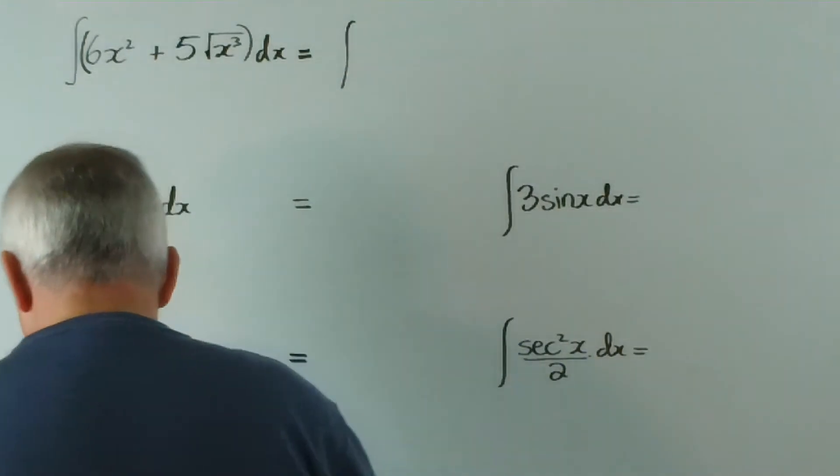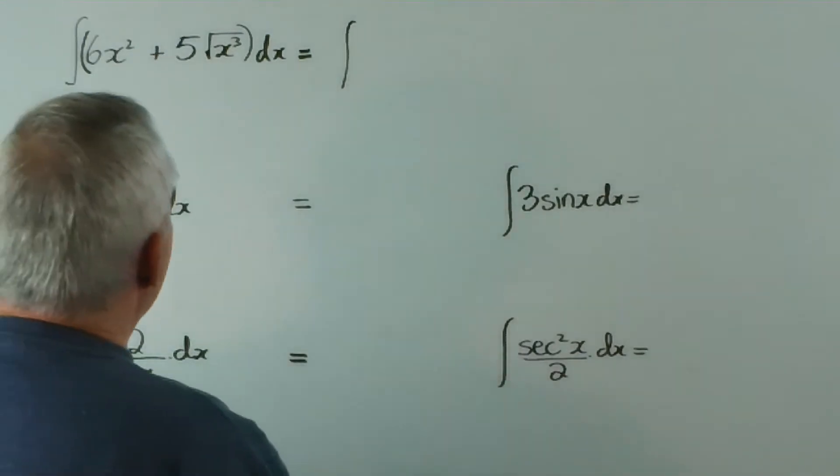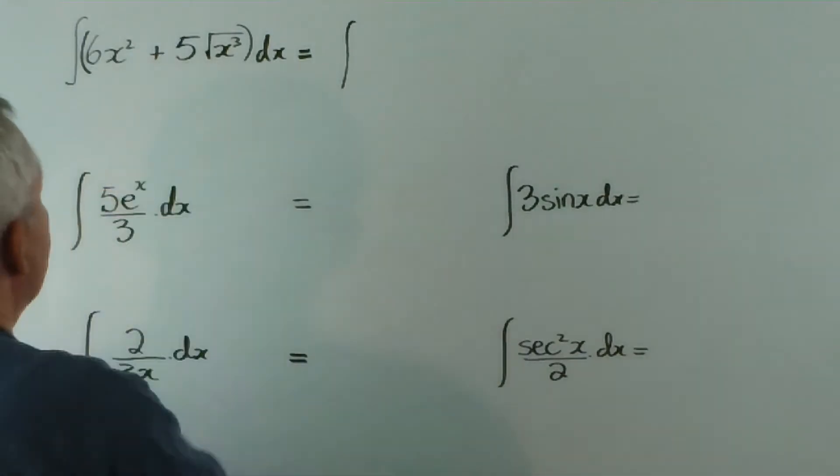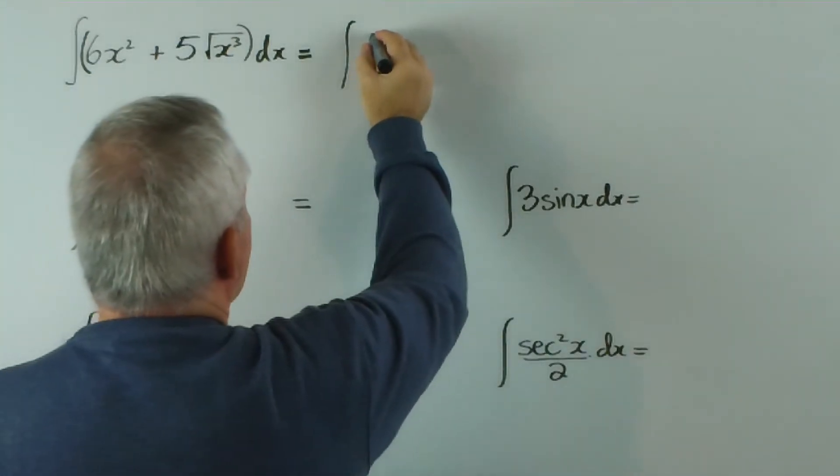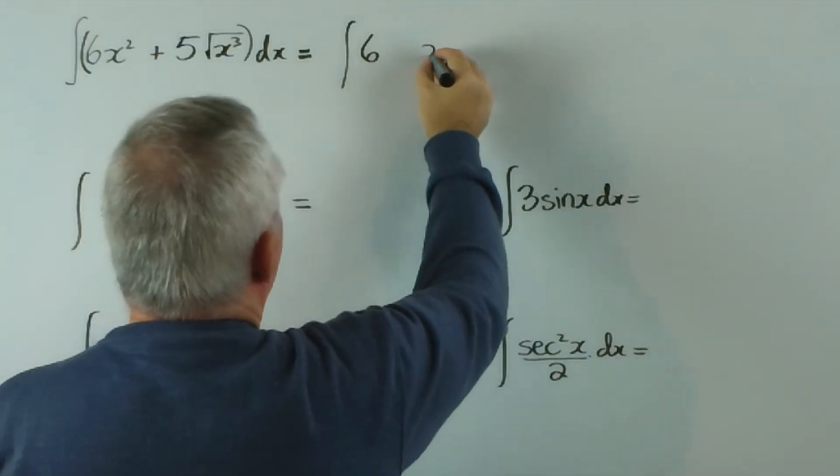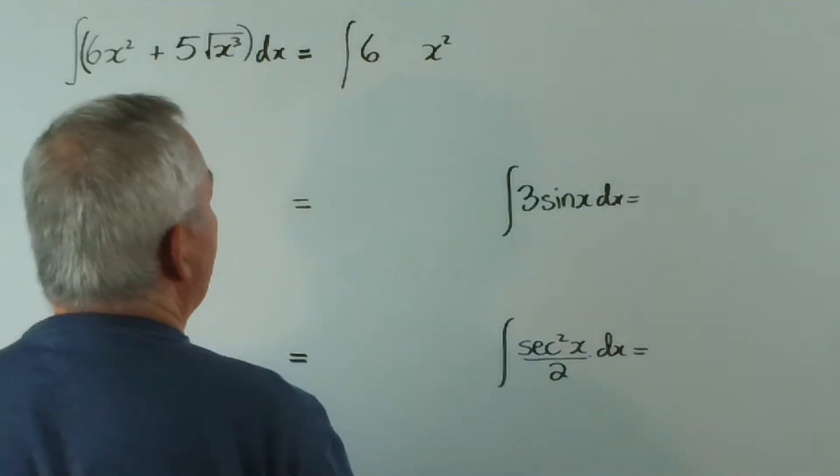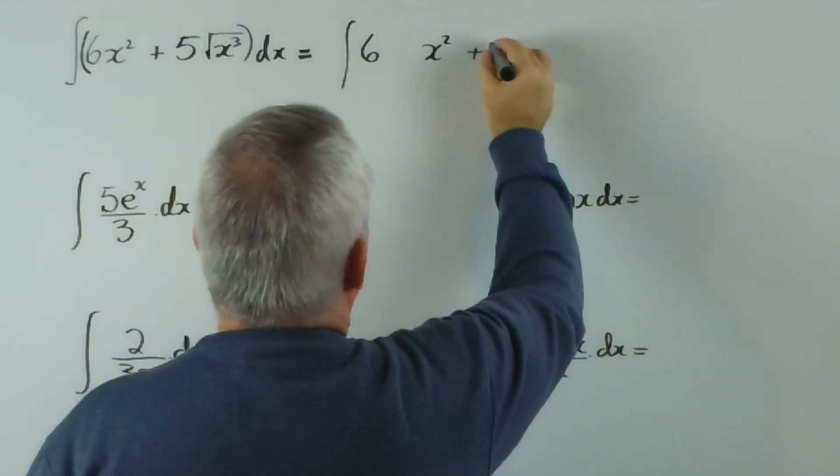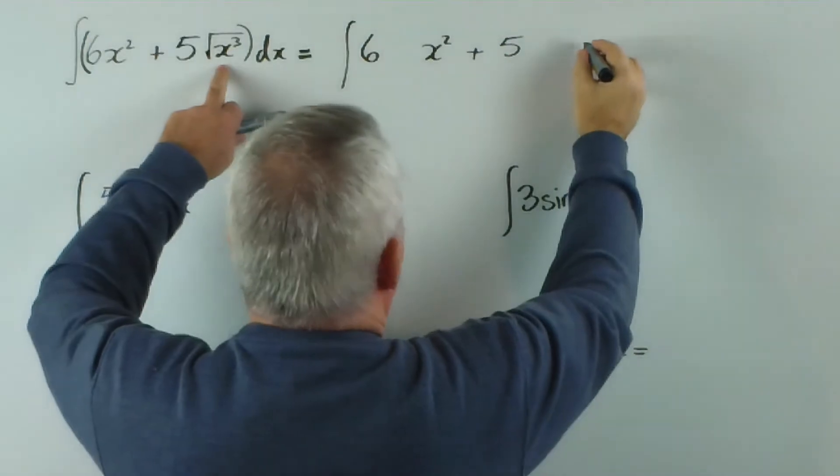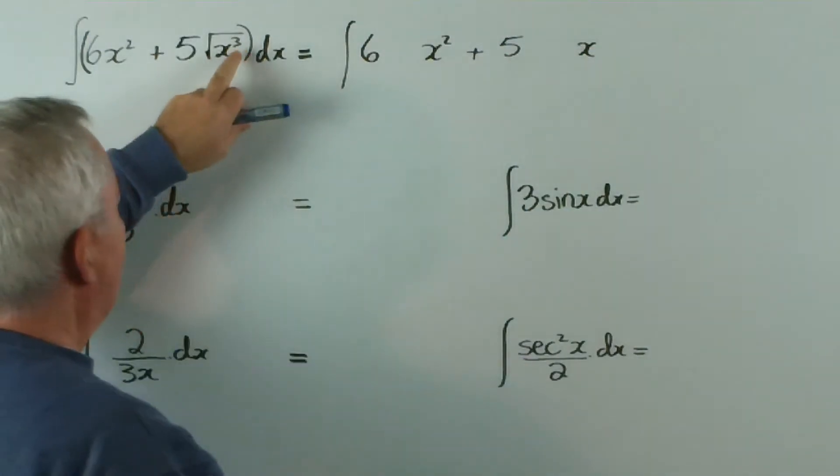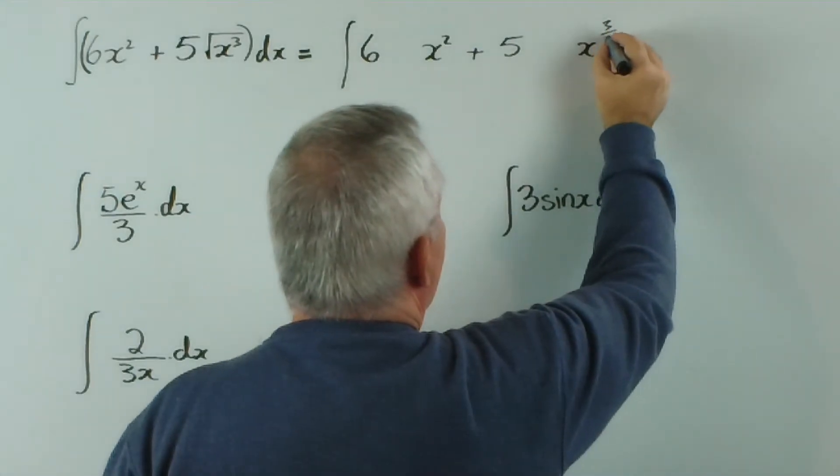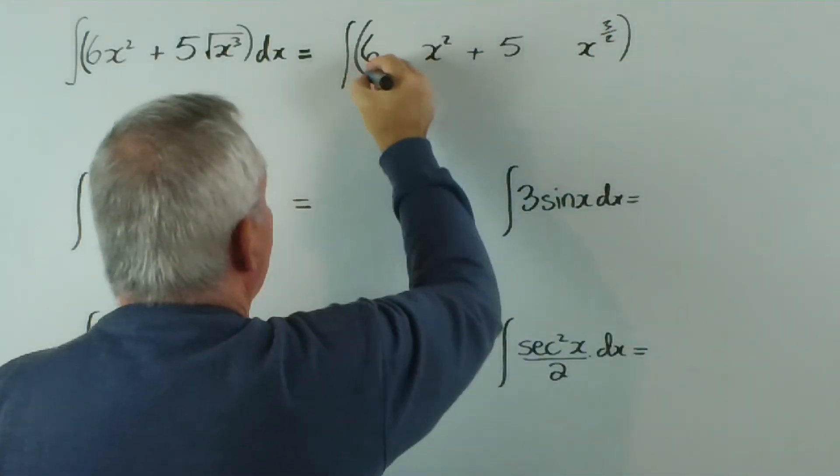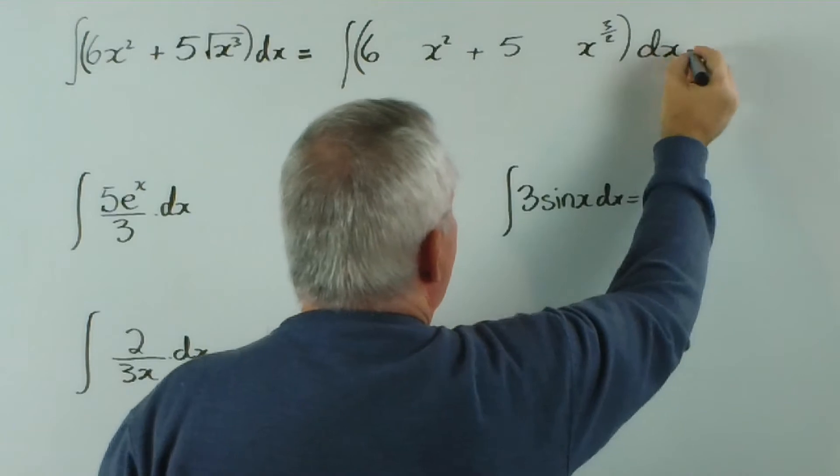The first time... actually, I'll use two colors. Here we have powers of x, and I would write this as a six here, x squared, plus five... now this is x cubed, but the square root is a power of a half, so it would be x to the three on two, dx.